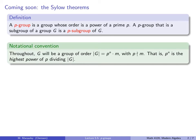Throughout this lecture and the remaining lectures of this section, G will be a group of order p to the n times m, for some prime p, where p does not divide m. In other words, we're going to pick a prime p, and p to the n is the highest power of p that divides the order of the group. We're just going to assume that p is a prime that divides the order of the group, and this is the largest power of that prime that does.